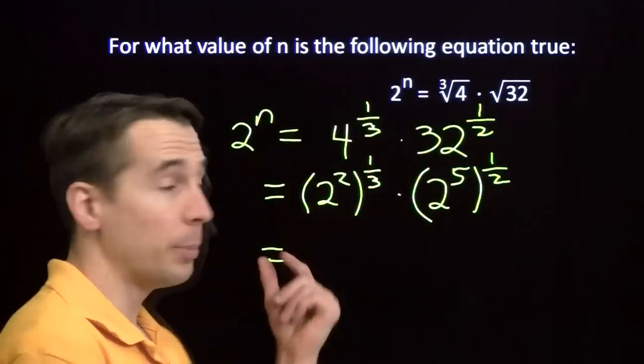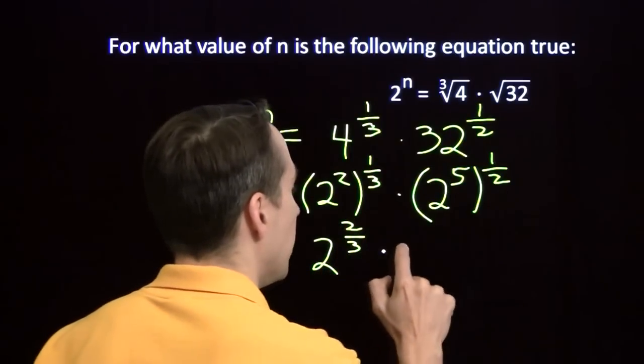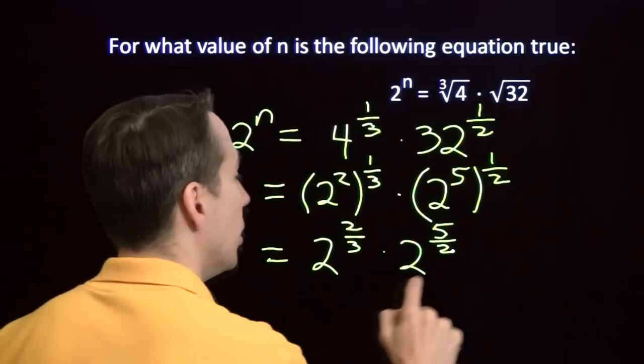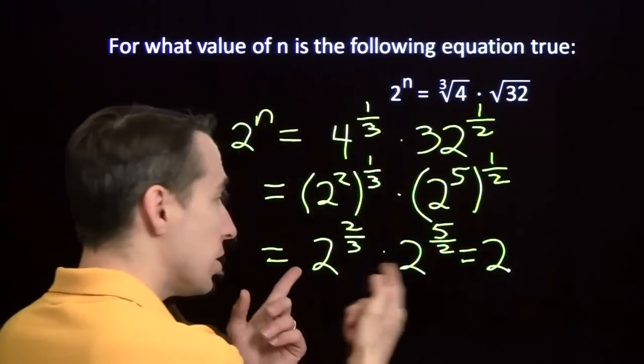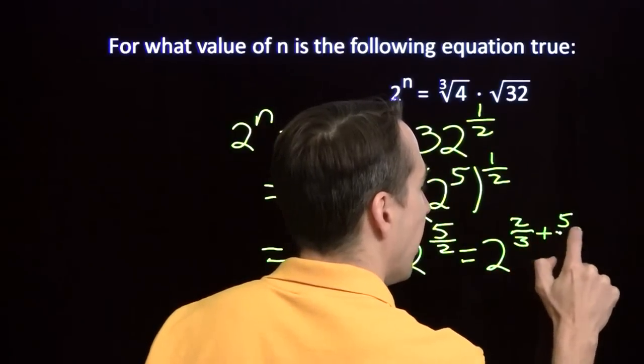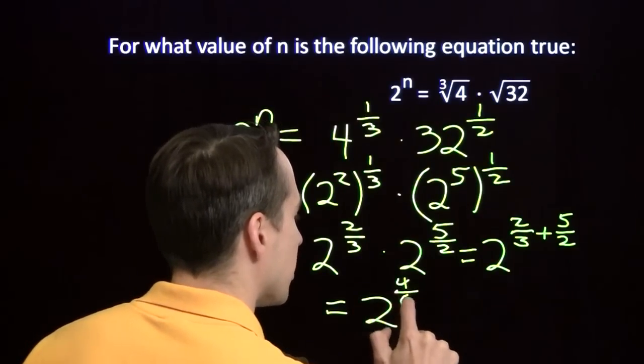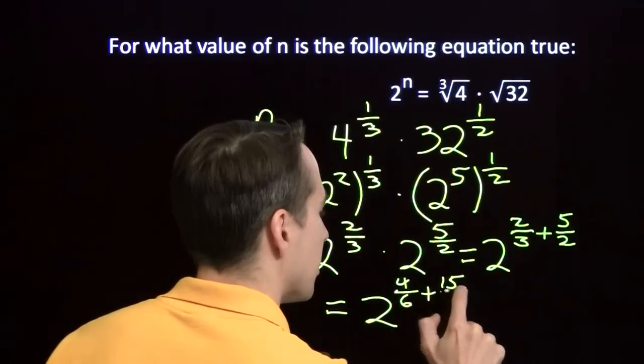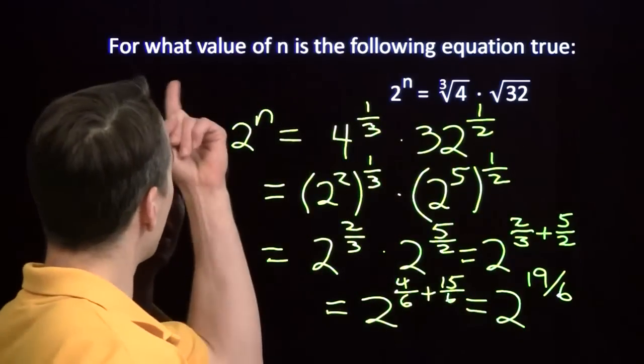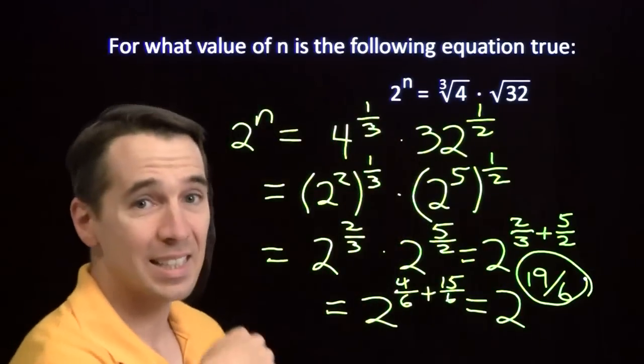Now we have power of a power. We multiply the exponents. This is 2 to the 2 3rds. And over here, we have 2 to the 5 halves. Just multiplying those two exponents. Now the bases are the same. So now bases are the same, and we're multiplying here. We add the exponents. This is 2 to the 2 3rds plus 5 halves. Now we're going to need a common denominator there. This is 2 to the 4 6ths plus 15 6ths. And finally, we have 2 to the 19 over 6. We're looking for the value of n. Now it's easy to compare these two and see that our value of n is 19 6ths, and we're done.